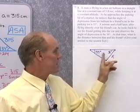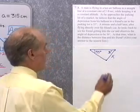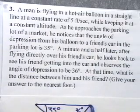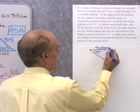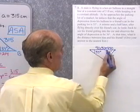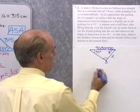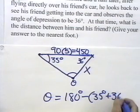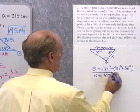I have the angle opposite x and another angle. I need one more side. A minute and a half is 90 seconds, times 5 feet per second, equals 450 feet — that's the length of the side the balloon travels. Now I'll find angle theta: theta equals 180 minus (35 plus 36) degrees, which gives 180 minus 71, or 109 degrees.